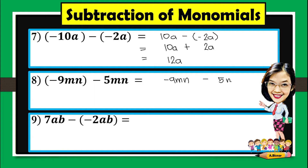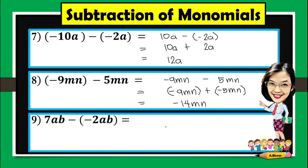For number 8: negative 9mn minus 5mn. Find the opposite of 5mn, which is negative 5mn, then proceed to addition and copy negative 9mn. They are both negative, so negative 9mn plus negative 5mn gives negative 14mn. For number 9: 7ab minus negative 2ab — the opposite of negative 2ab is positive 2ab. So 7ab plus 2ab equals 9ab.